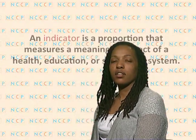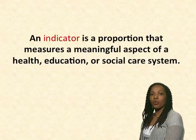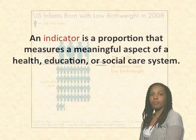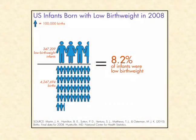Before we turn to directions for the tool, I'll briefly go over the definition of an indicator. An indicator is a proportion that measures a meaningful aspect of a health, education, or social care system. An example of an indicator is the proportion of infants born with low birth weights in the year 2008. Indicator data can be collected at the neighborhood, county, city, state, or national level. Indicator data typically are collected over a specified period of time that can be compared to another time period.